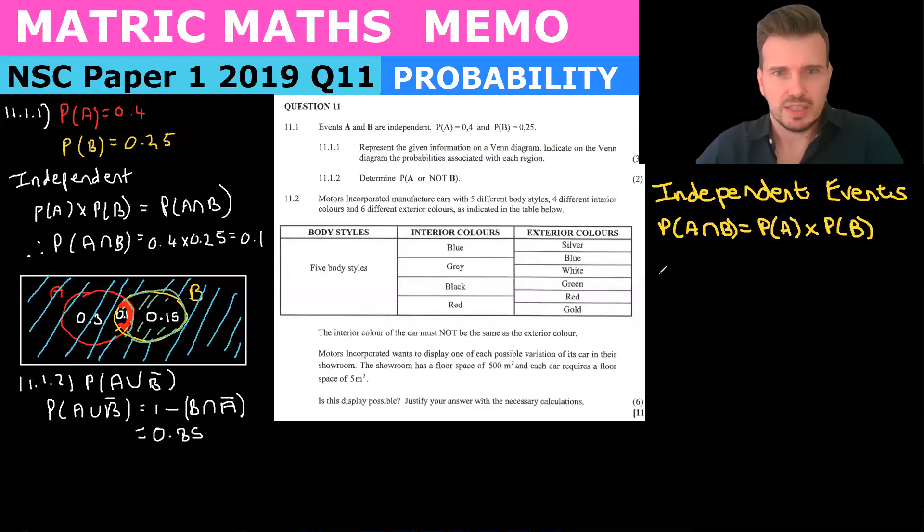11.2 says I have a motor vehicle company with five different body styles, so we've got five body styles here, and they can have four different interior colors, so there's four different colors, and six different exterior colors. We have a showroom floor with 500 meters squared and each car requires 5 meters squared of space. So they want to know is it possible to display all the possible variants of cars on the floor.